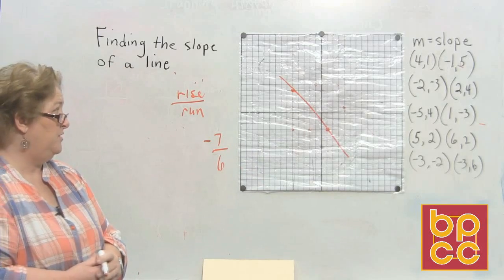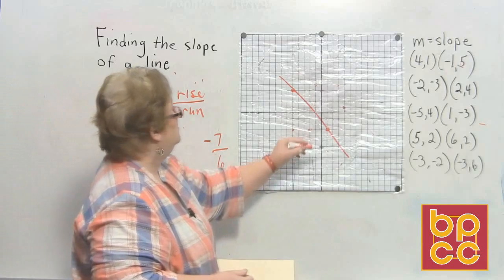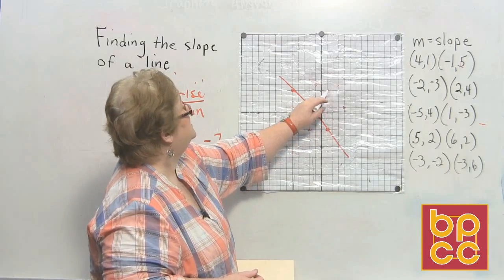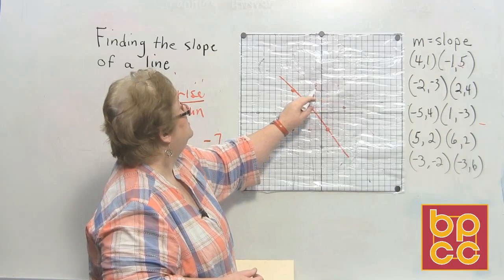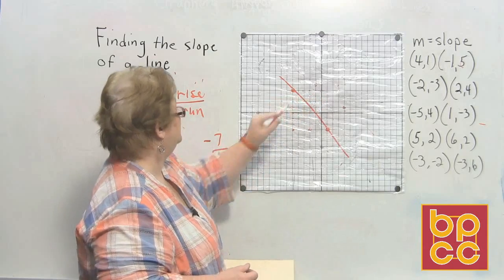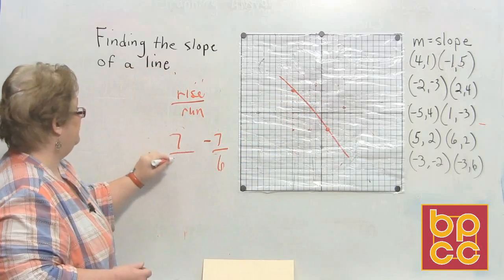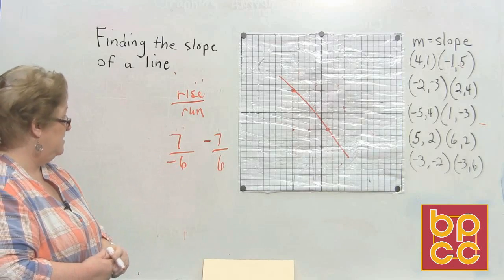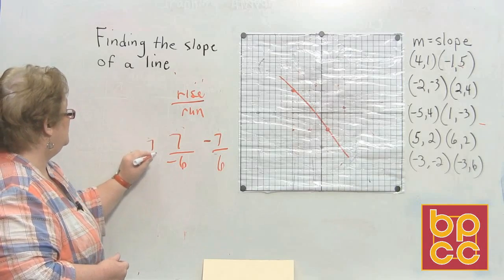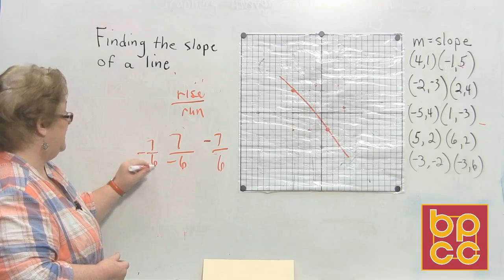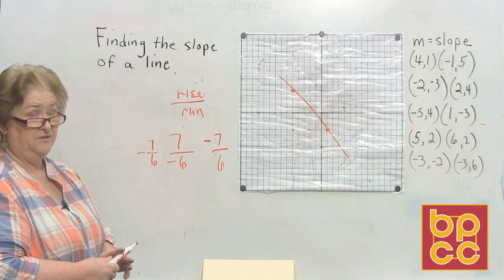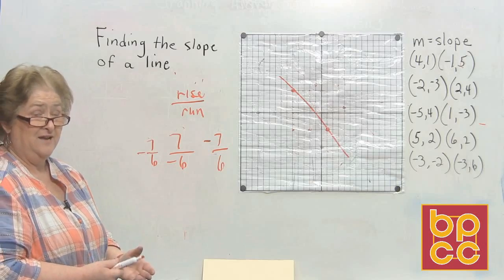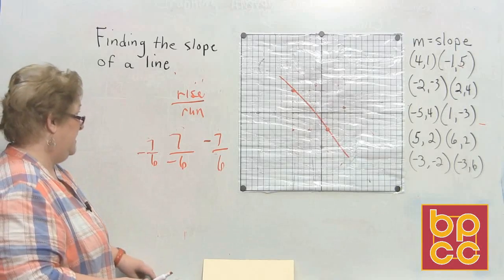Using the other point: going up seven — positive seven — then to the left six — that's negative six. So you can write it as positive seven over negative six, or negative seven over six — either way is fine. Or write it with a negative sign in the middle, meaning only one of them is negative. People sometimes confuse that — if both were negative, they'd be positive.